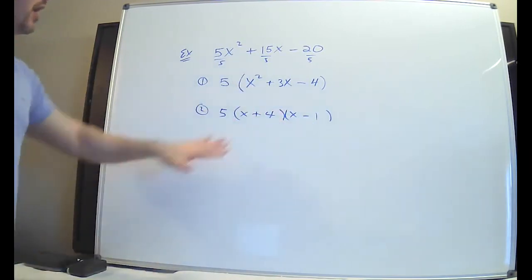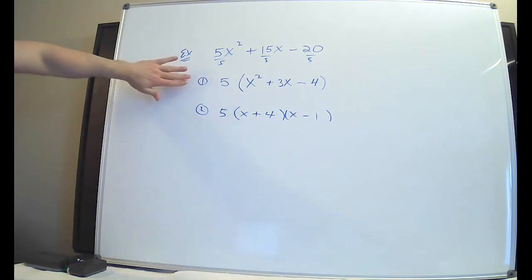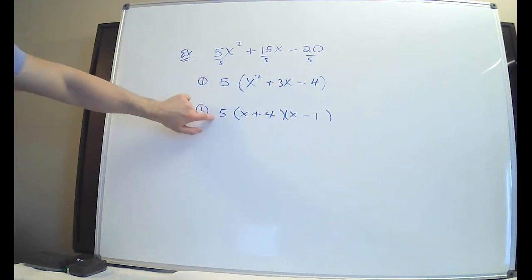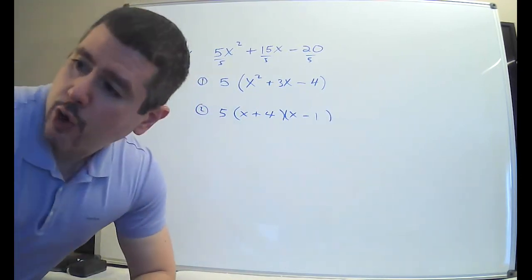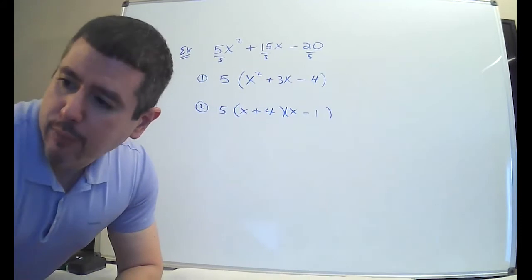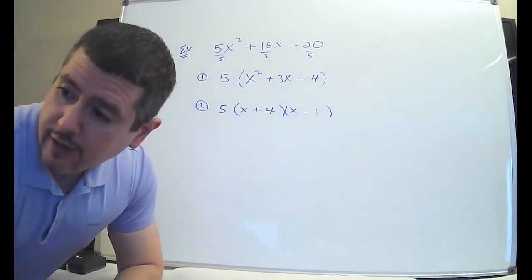This doesn't factor anymore. That is factored completely. If you stop here, it is not factored all the way. If you don't show that step, however, if you just jump to here, then it is going to be marked wrong. You must show the step where you factor out the GCF. So that's the first one.